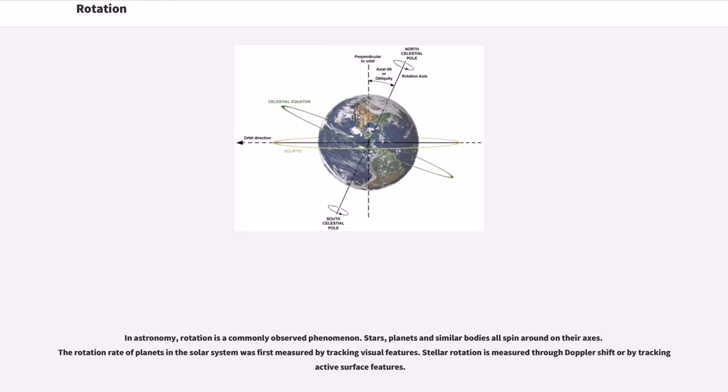In astronomy, rotation is a commonly observed phenomenon. Stars, planets and similar bodies all spin around on their axes. The rotation rate of planets in the solar system was first measured by tracking visual features. Stellar rotation is measured through Doppler shift or by tracking active surface features.